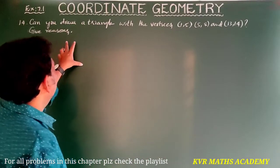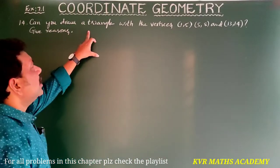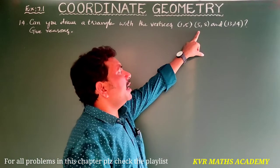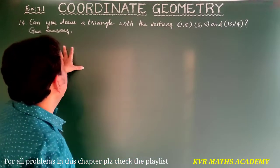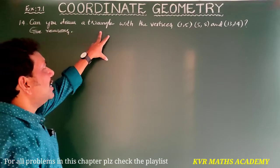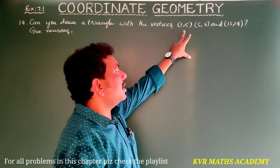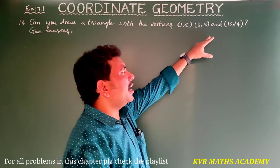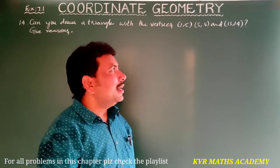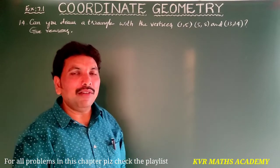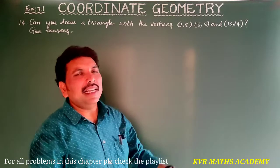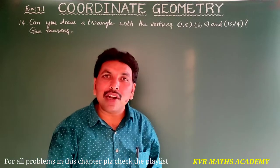Next, 14th question: can you draw a triangle with the vertices (1, 5), (5, 8), and (13, 14)? Three points are given and we have to check whether we can form a triangle with these vertices or not.